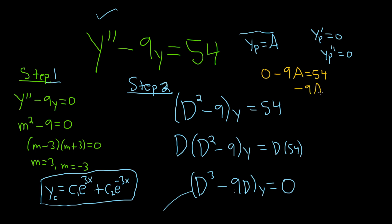So you have negative 9a equals 54. So dividing by negative 9, dividing by negative 9, we have a equals negative 6. 6 times 9 is 54.